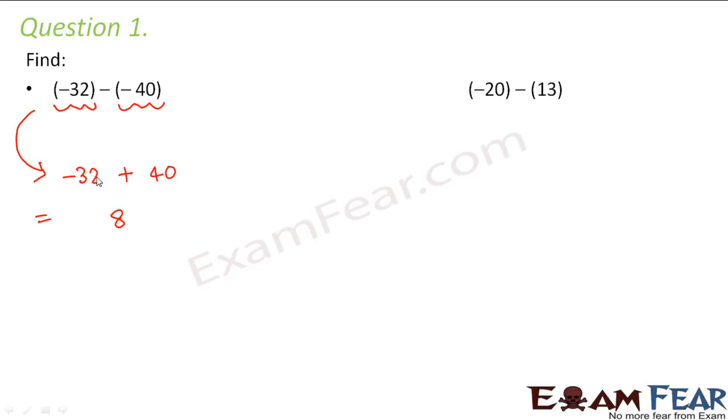So 40 minus 32 is 8. Which is bigger? 32 or 40? 40 is bigger, so it would be plus. So the answer is plus 8.